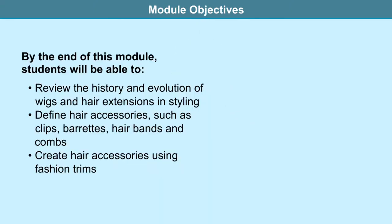Welcome to Unit 3 of Fashion Accessories Entrance, Module 2. In this unit we have been discussing accessories worn on the head and the neck. In Module 1 we discussed hats. As a continuation, in Module 2 we will explore the world of hair accessories. By the end of this module, students will be able to review the history and evolution of wigs and hair extensions, define hair accessories such as clips, barrettes, hair bands and combs, and create hair accessories using fashion trims.